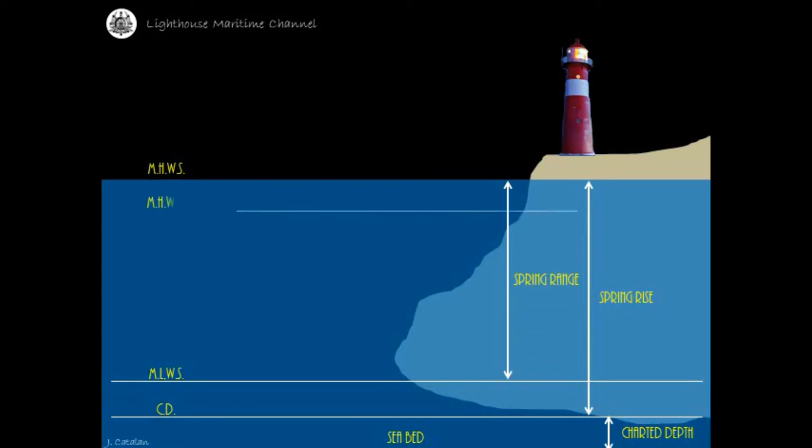Mean high water neap is the average height of the high waters of the neap tides. Neap rise is measured from the chart datum to the mean high water neap.